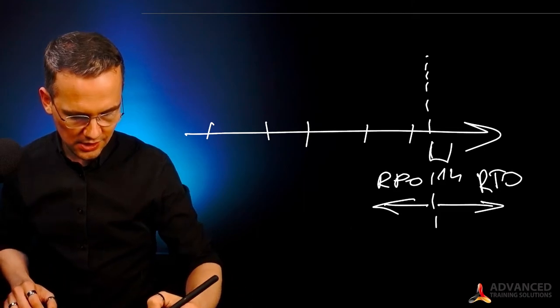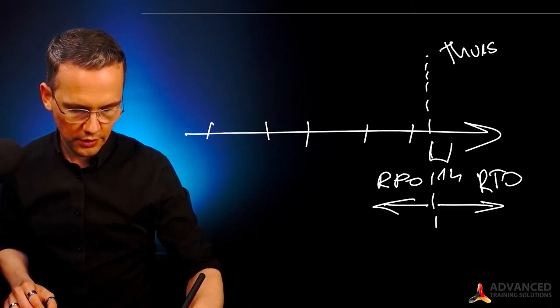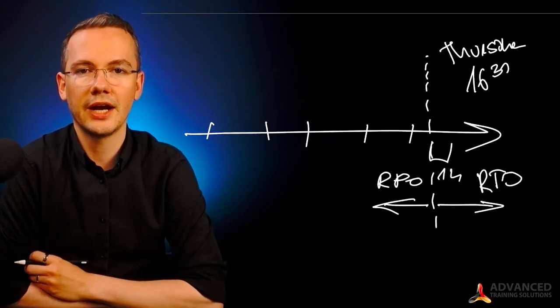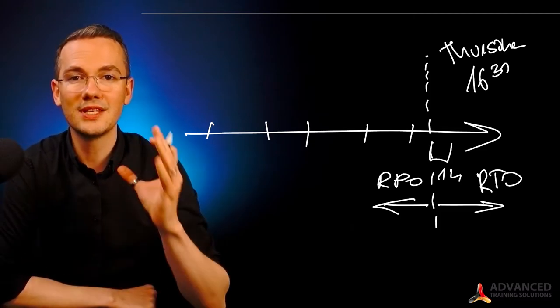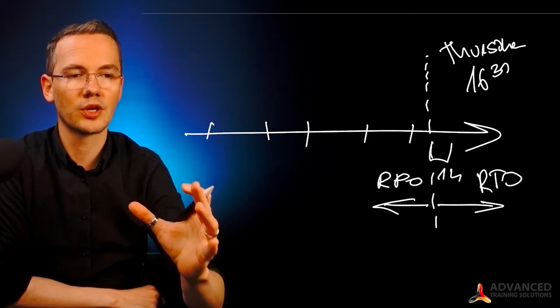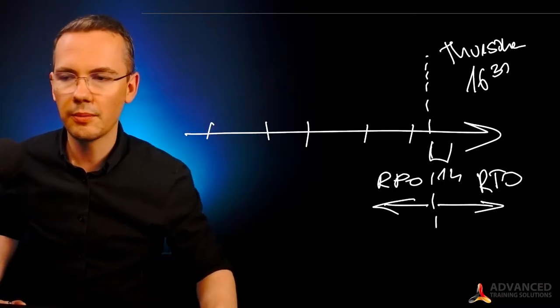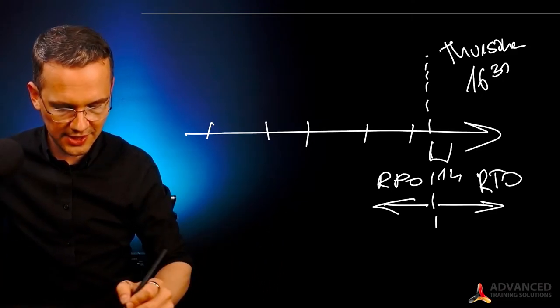Let's say that this failure occurred on Thursday, Thursday at, let's say, 4:30 PM. So 16:30, half past four. So this is when my failure occurred. If I was taking all of my backups, let's say I was taking my transaction log backup every three hours, for the sake of example.